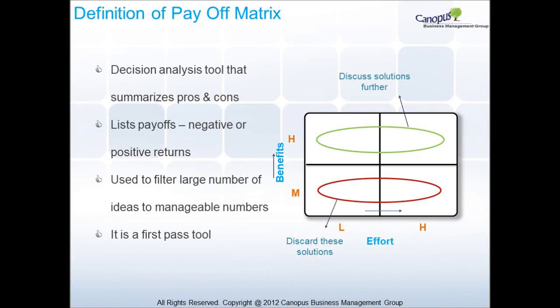Payoff matrix is a decision analysis tool that summarizes pros and cons of various solutions. It involves listing payoffs, which are either negative or positive returns, and it is used to filter a large number of ideas into manageable ones. This is also an example of a first-pass tool.